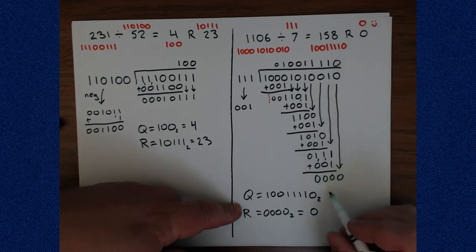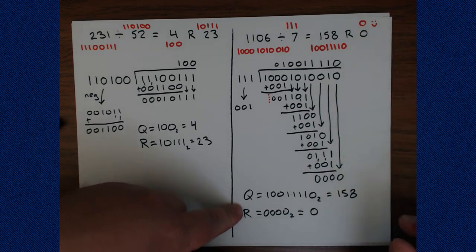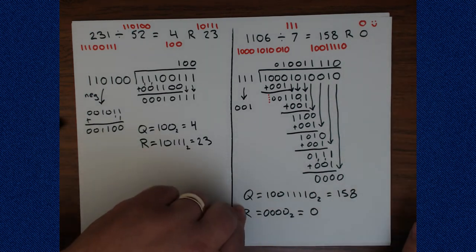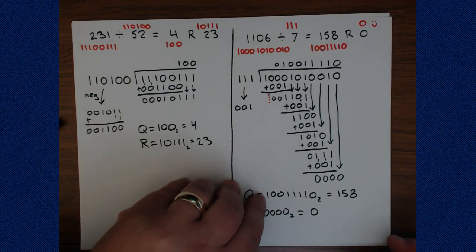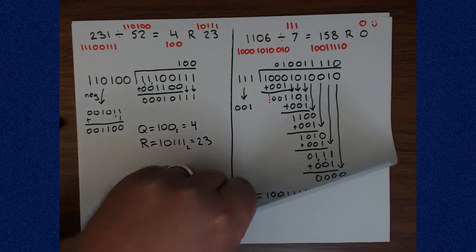Our quotient is 1, 0, 0, 1, 1, 1, 1, 0 and our remainder is 0s — which is 0 decimal. This is the same binary pattern as our expected value of 158. Excellent — everything is working wonderfully.